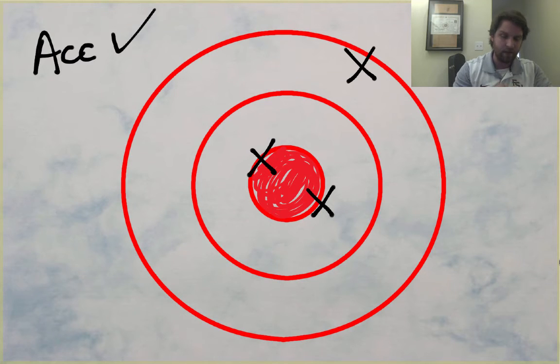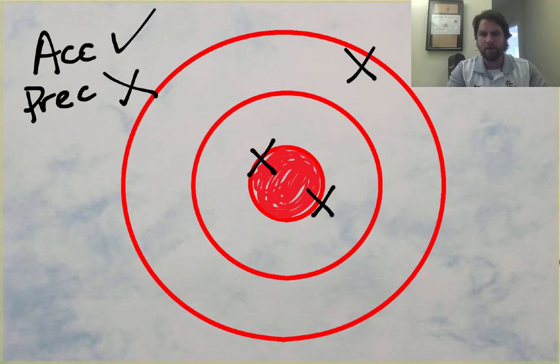So we will say yes, that is accurate. Is that precise? I'm going to say no. No, that wasn't precise because we don't have a tight grouping, but we do have a couple of things that hit the mark, a couple of data points that hit the mark.